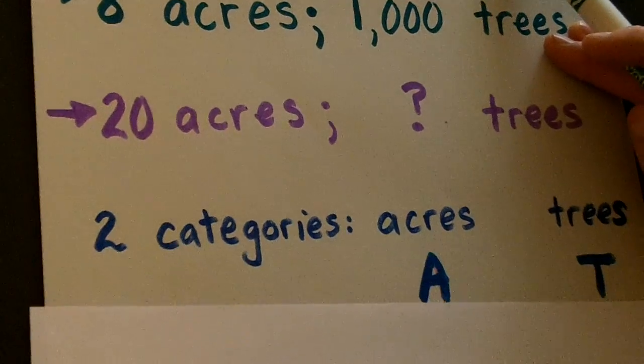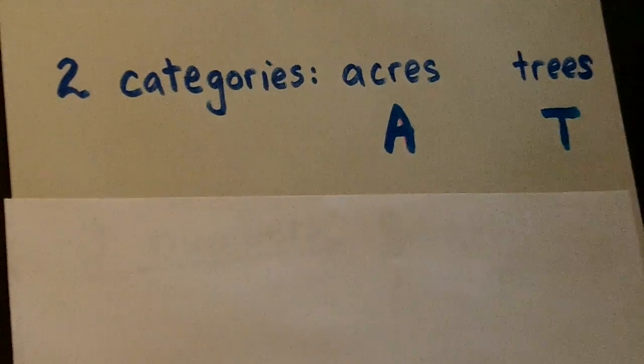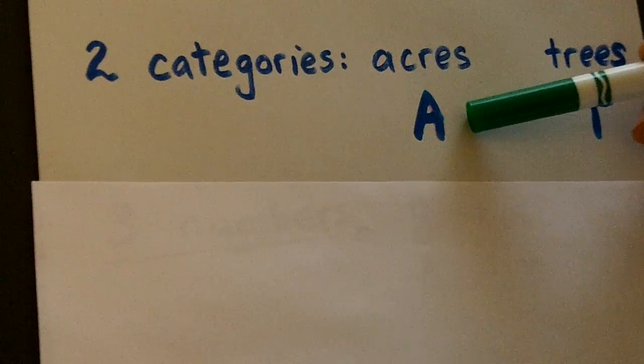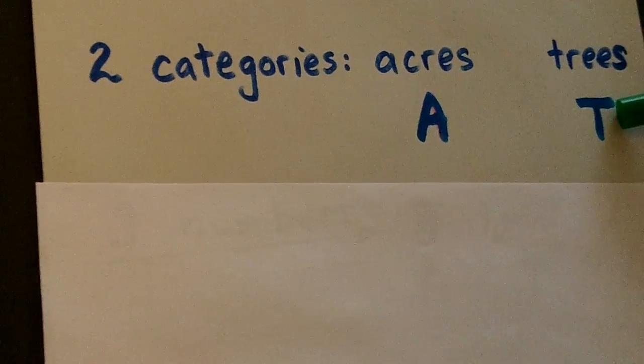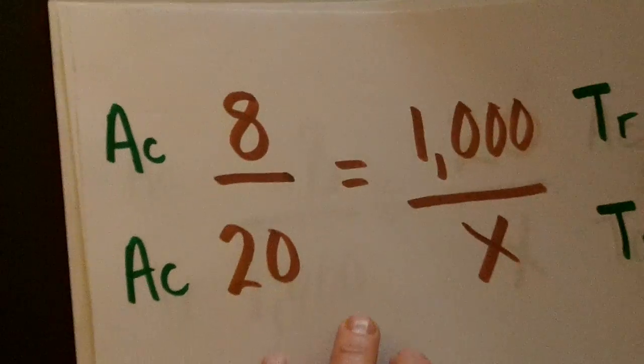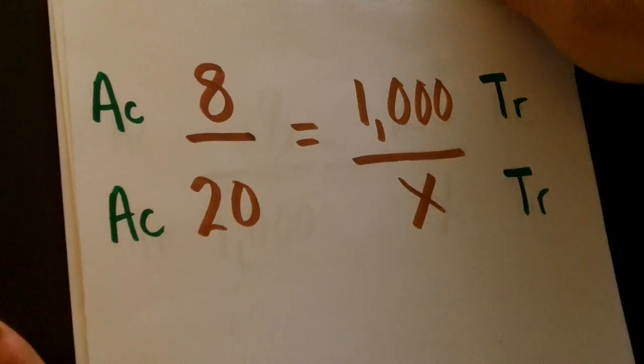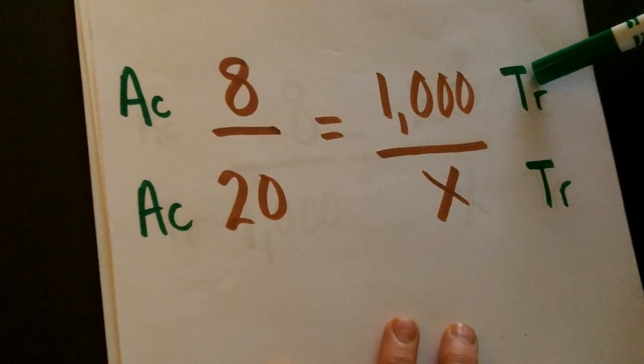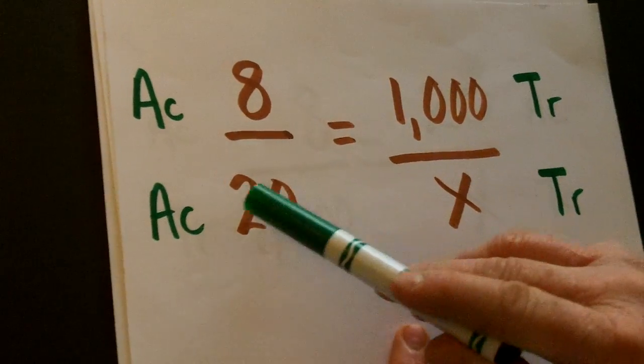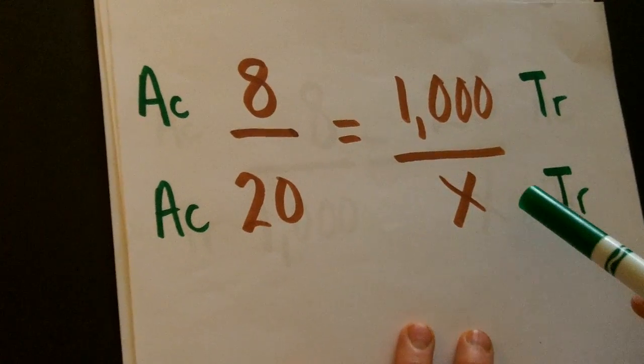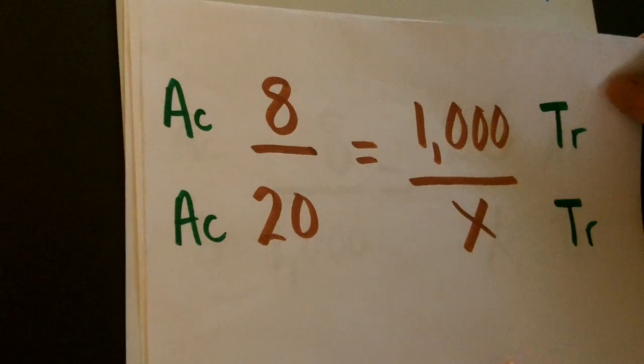Now, there are two categories here. Acres, which we'll use as a capital A and trees as a capital T. So, let's see if we can set this up. How's this? Eight acres produces 1,000 trees. 20 acres should produce an unknown number of trees.